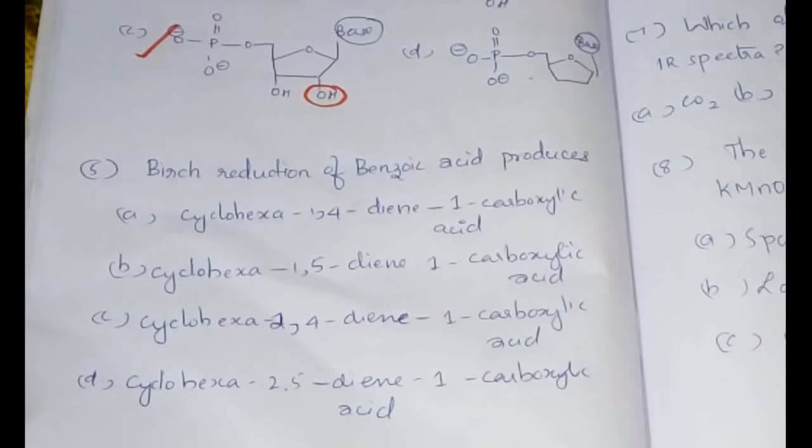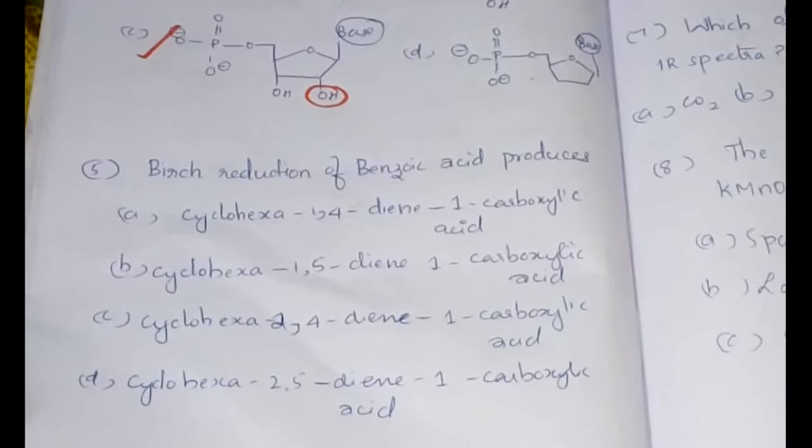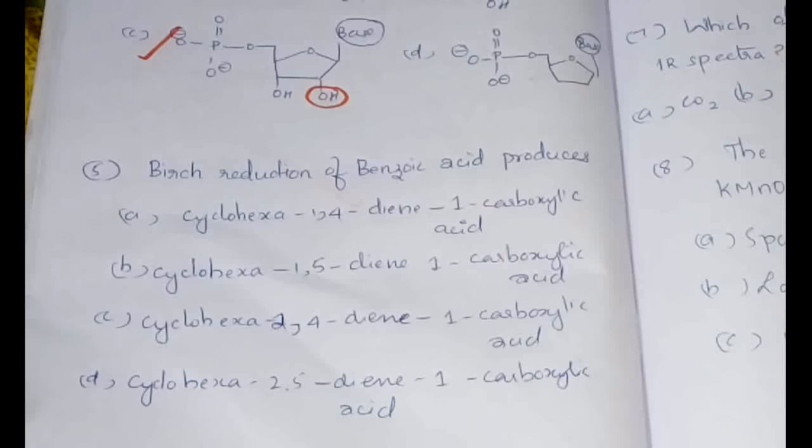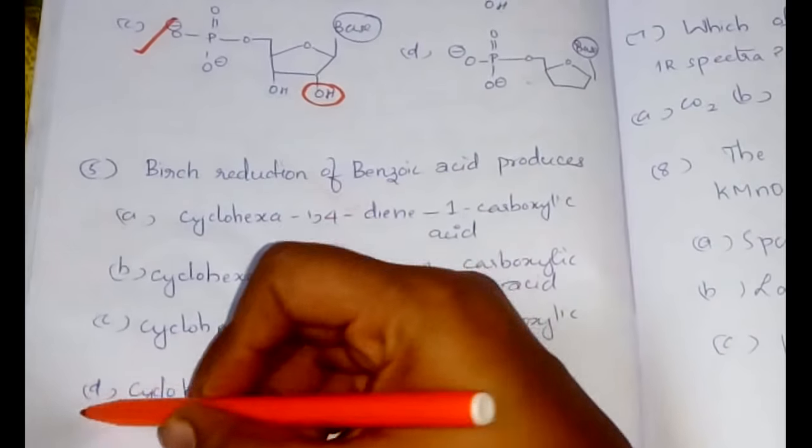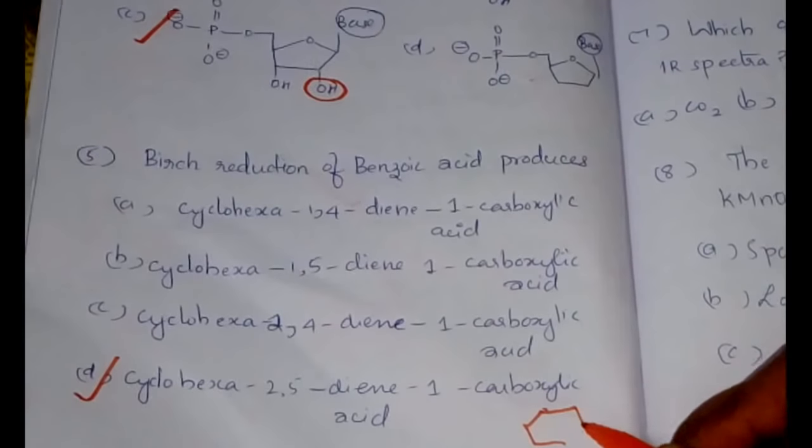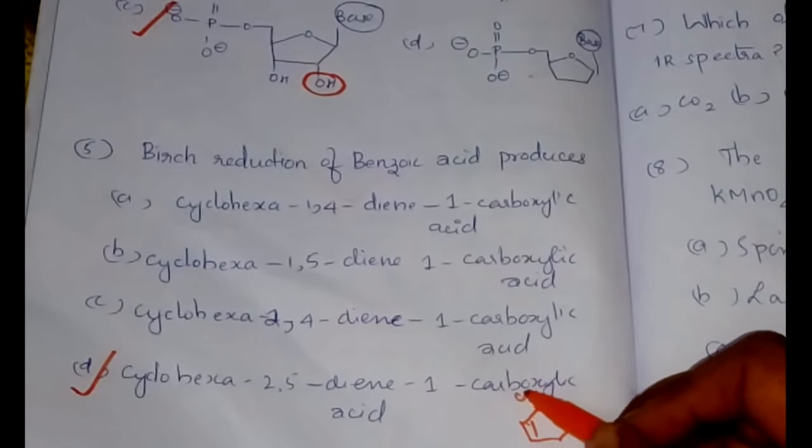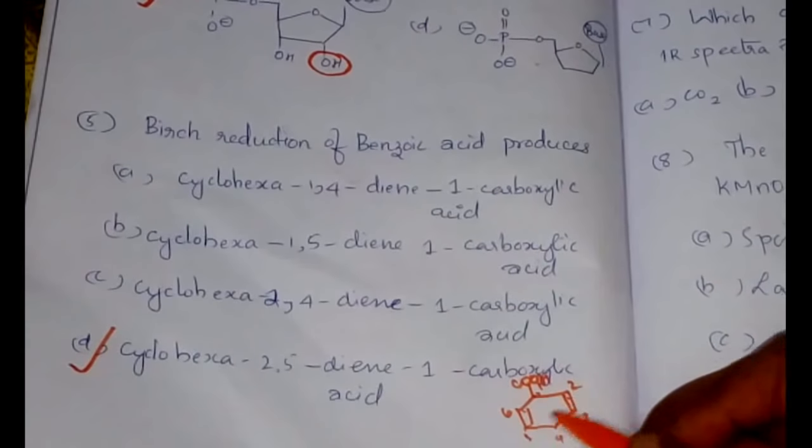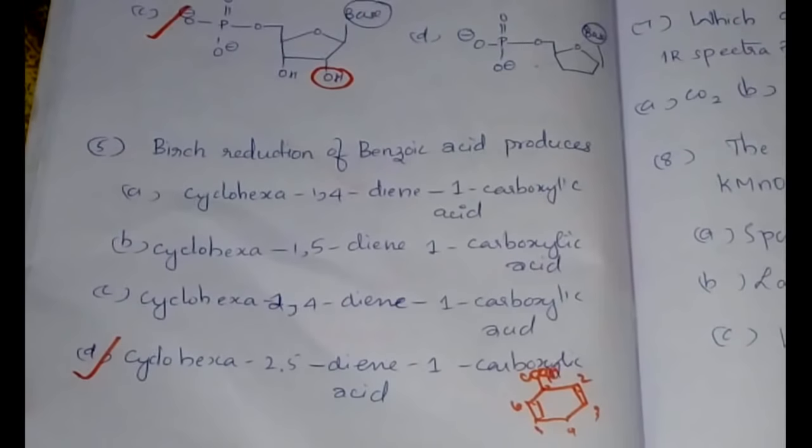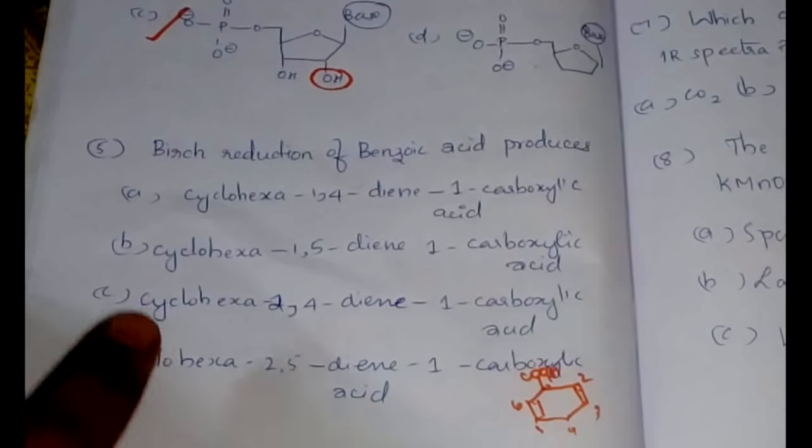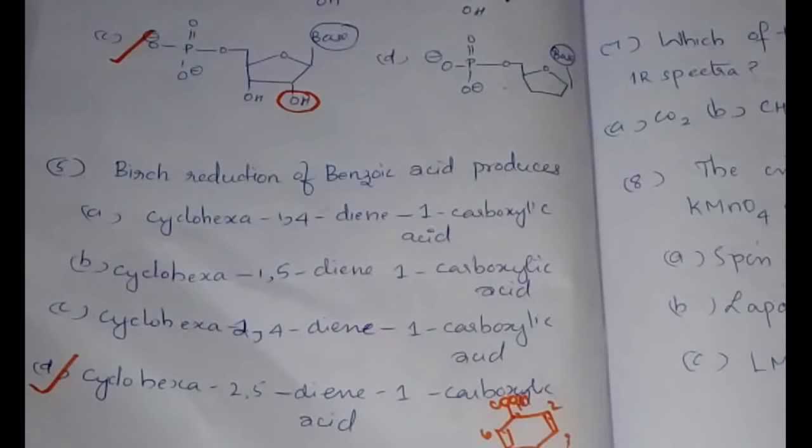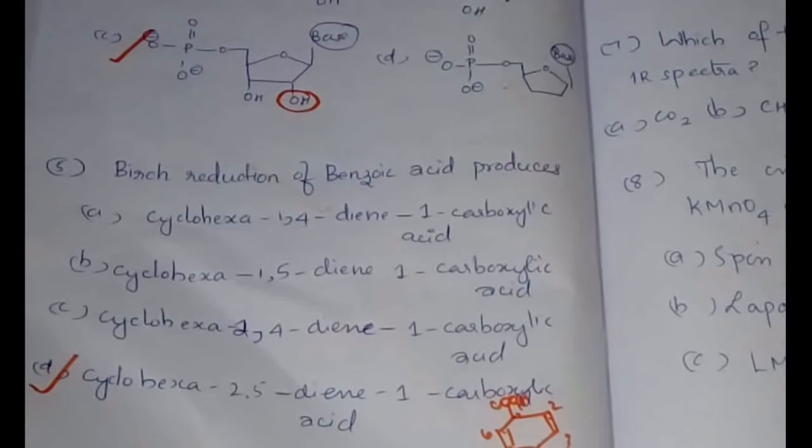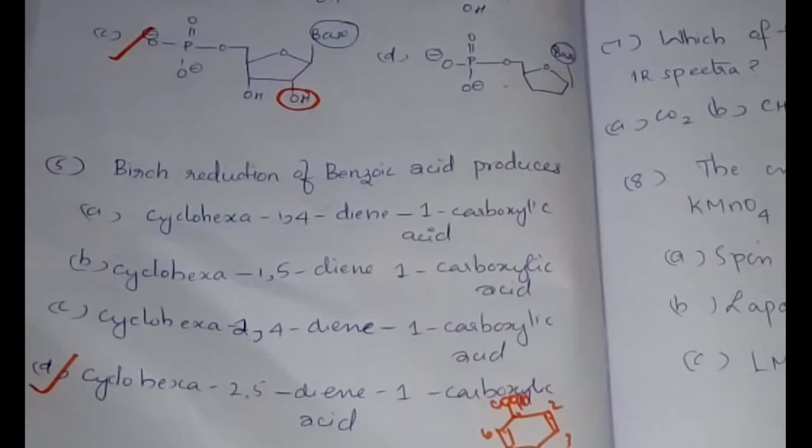The next question: the Birch reduction of benzoic acid produces. The Birch reduction is also important; I have already told that. The Birch reduction of benzoic acid will be producing cyclohexa-2,5-diene-1-carboxylic acid. This should be the answer. After the reduction, it would be like this: 1, 2, 3, 4, 5, 6. So 2 and 5, therefore it should be cyclohexa-2,5-diene-1-carboxylic acid.